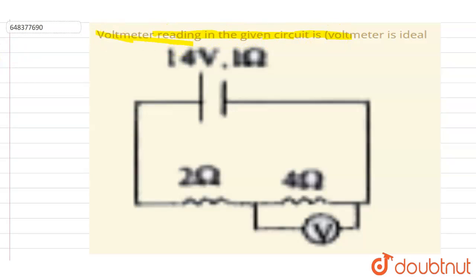If you see here, this is the circuit. Let's say this is the ideal voltmeter, so current here will be I.